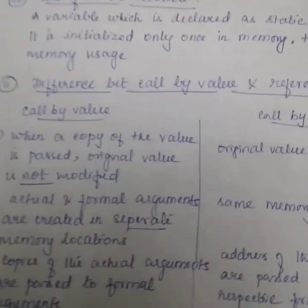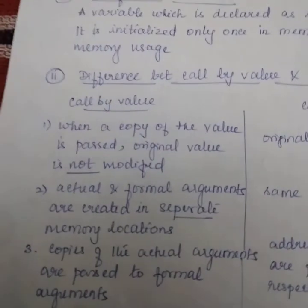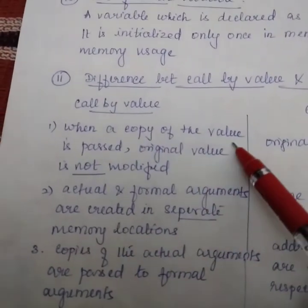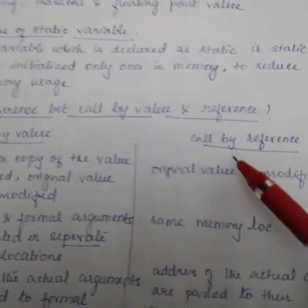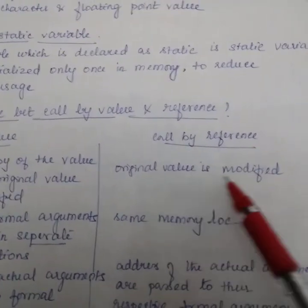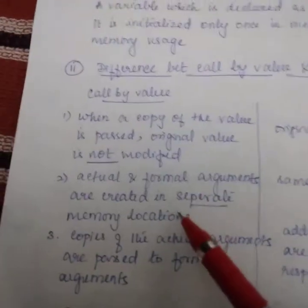call by value and call by reference. Call by value, when a copy of a value is passed, original value is not modified in call by value. But in call by reference, the original value is modified.